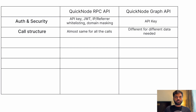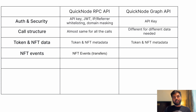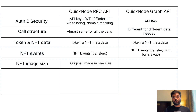With Quicknode's RPC API, you can get token data, NFT data, and NFT events like transfers. With Quicknode's GraphQL API, you can get token data, NFT data, and NFT events like transfer, mint, burn, and swap. With Quicknode's RPC API, you can get NFT images only in their original size, and only images stored on decentralized storage. But with Quicknode's GraphQL API, you can get images in multiple sizes.